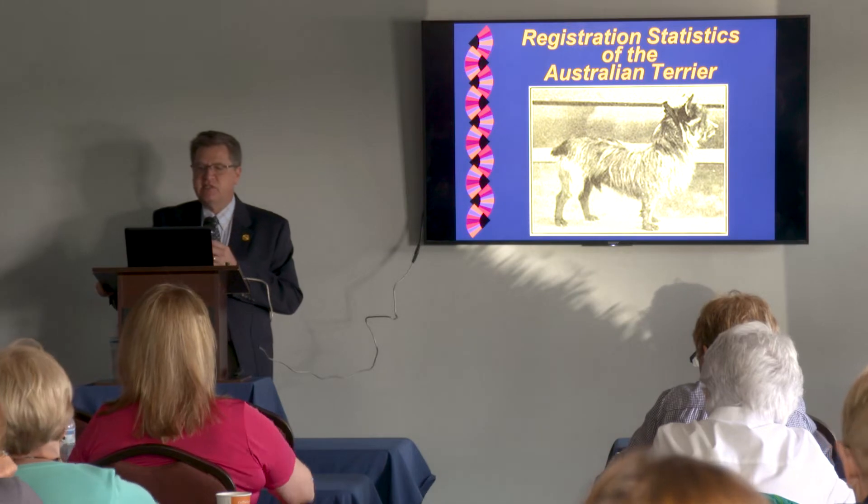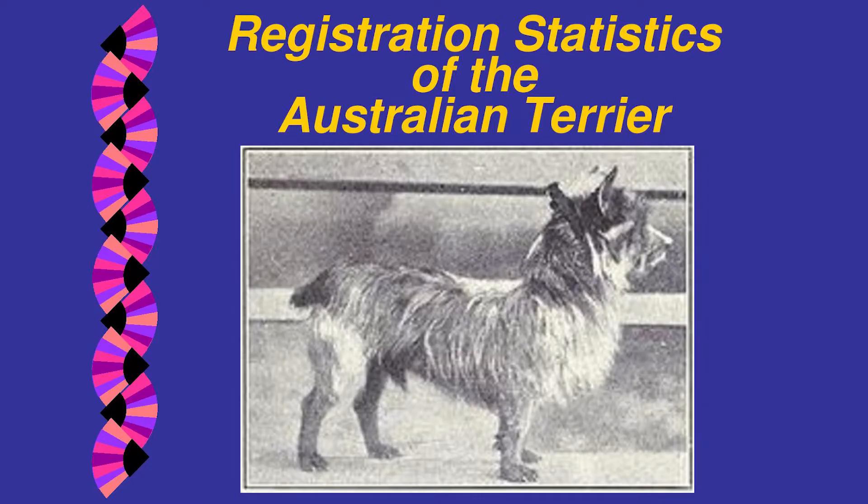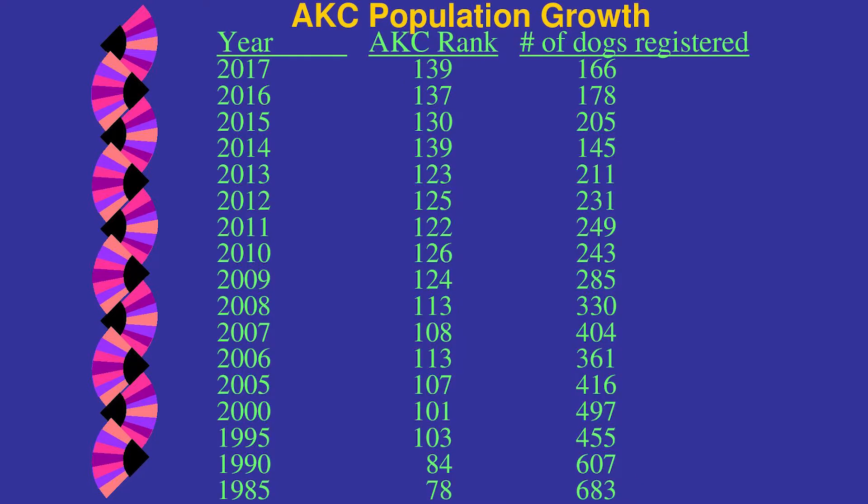Let's start with the registration statistics of the Australian Terrier, using AKC data since we're in America, even though it's an Australian breed. Starting at 1985: your AKC rank was 78th with 683 dogs registered. Five years later, 84th place with 607 dogs. Five years later, 103rd, losing close to 150 dogs to reach 455. Then up to 497, then down to 416.